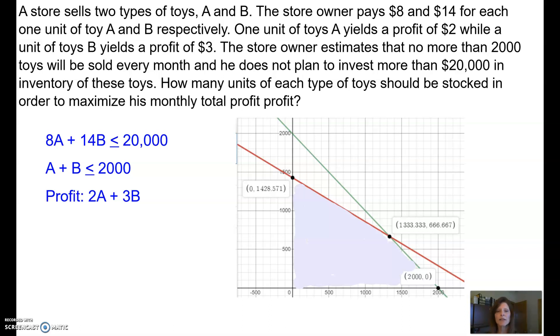knowing that we have certain constraints, that we are limited on our cost that we want to spend, how much we're going to invest, and we're limited on the number of items we want to manufacture or have the capacity to manufacture. When I intersect those, I find the intersection point, but that's not always the optimal point.